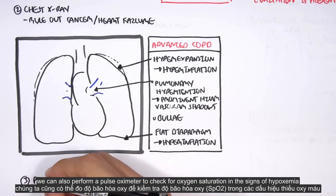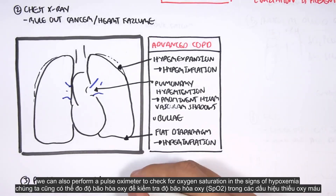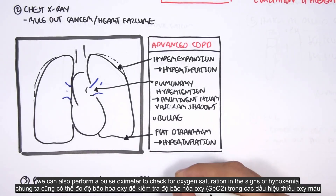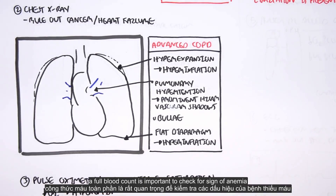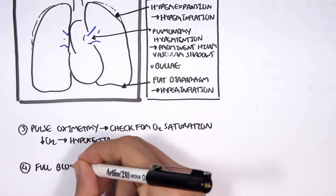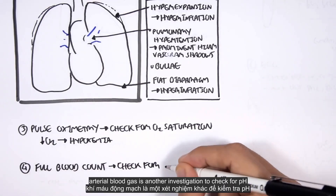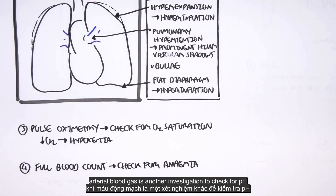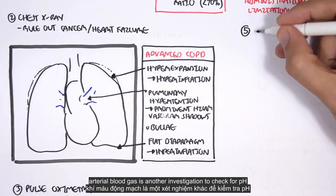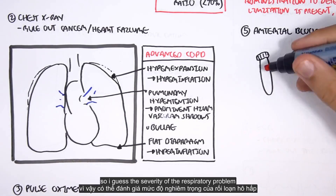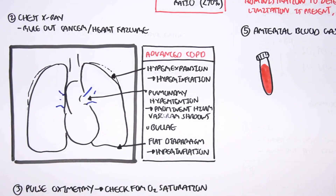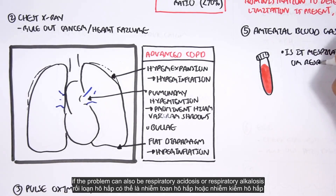We can also perform pulse oximetry to check for oxygen saturation and signs of hypoxemia. A full blood count is important to check for signs of anemia. Arterial blood gas is another investigation to check for pH and assess the severity of the respiratory problem — whether it is respiratory acidosis or respiratory alkalosis.